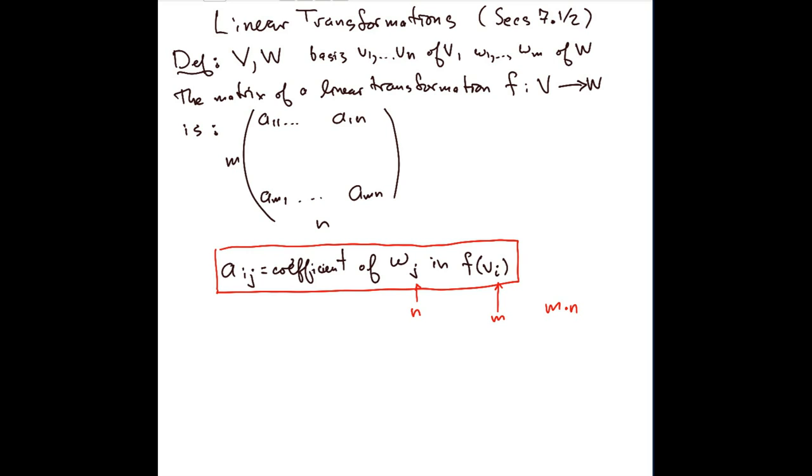Another way of saying more or less the same thing is that you can write f of summation x_i·v_i (here i runs from 1 to n)—this here is an arbitrary vector in V with its coefficients x_i—and the statement is that this is equal to summation of a_ij·w_j, and now the sum is over j running from 1 to m.